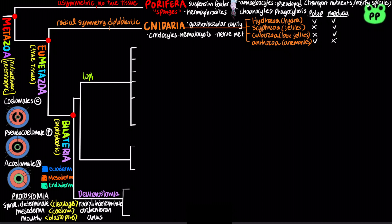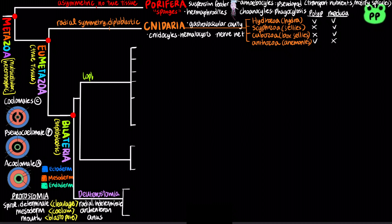Bilateria includes the clade Lophotrochozoa, which has been identified by molecular data and has the widest range of animal body forms. It includes the phylum Platyhelminthes, also known as flatworms, including tapeworms, planarians, and flukes.